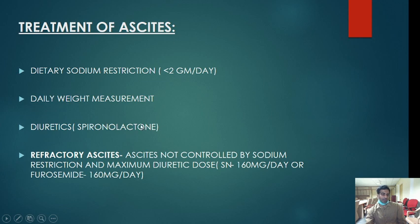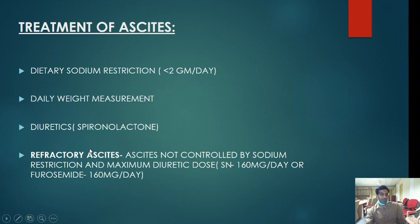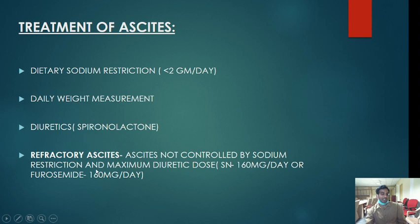Measure daily weight and adjust the diuretic dosage accordingly. Refractory ascites is defined as ascites not controlled by sodium restriction to less than 2 grams per day and giving maximum diuretic doses — spironolactone 400 mg per day or furosemide 160 mg per day. If ascites is not responding to usual treatment, it is called refractory ascites.